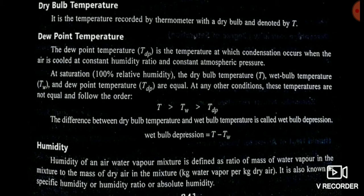The difference between the dry bulb temperature and the wet bulb temperature is called wet bulb depression. Another important term is humidity. Humidity is simply the ratio of the mass of water vapor present in the mixture to the mass of dry air in that mixture, expressed in kg of water vapor per kg of dry air.